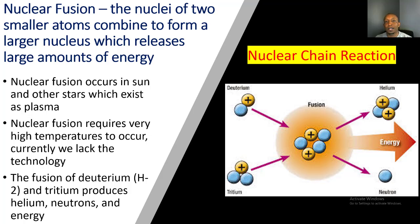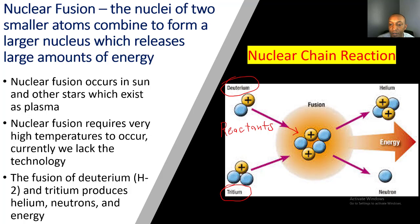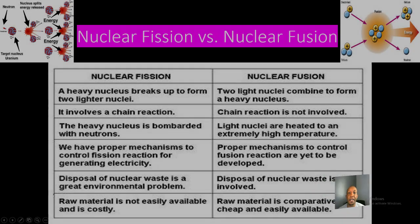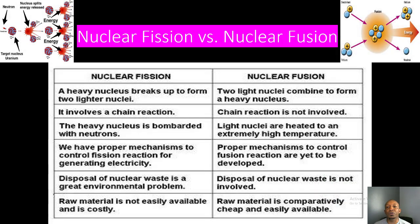The fusion of deuterium and tritium produces helium, neutrons, and energy. Our reactants are deuterium and tritium, and these two reactants fuse together to create our products: the atom helium, a release of energy, and a neutron.